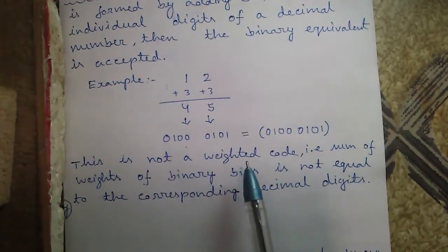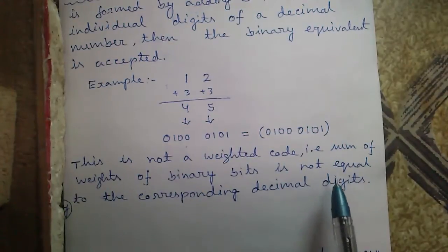XS3 is not a weighted code. That is, the sum of weights of binary bits is not equal to the corresponding decimal digits.